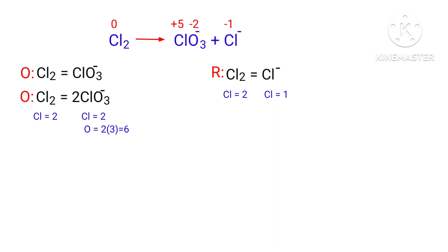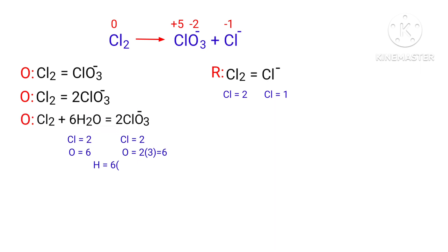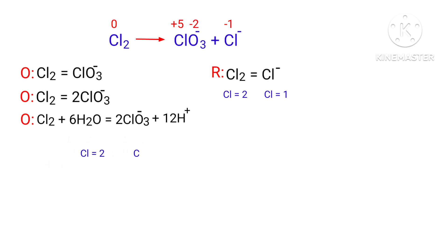Now we need to balance the oxygen atoms. To do this you can produce water molecules. The oxygen atoms are balanced. Now we need to balance the hydrogen atoms. To do this you can produce H⁺ ions. Now the number of atoms are balanced in the oxidation half-reaction.